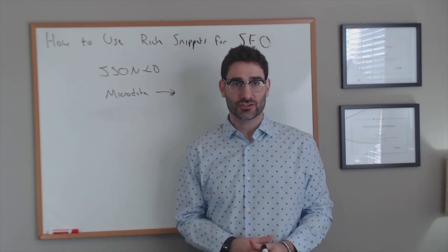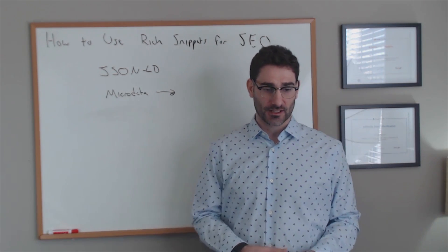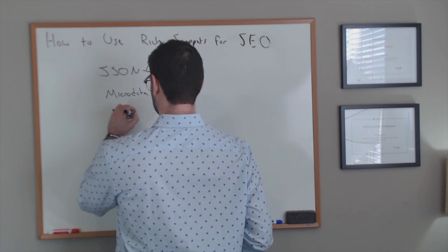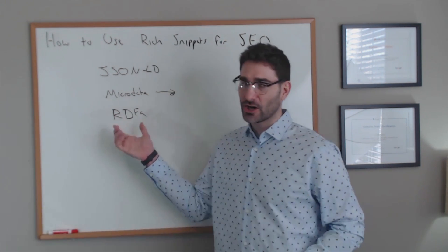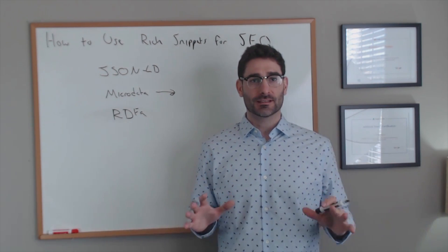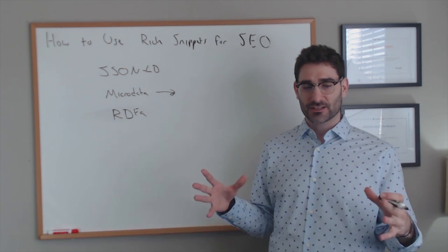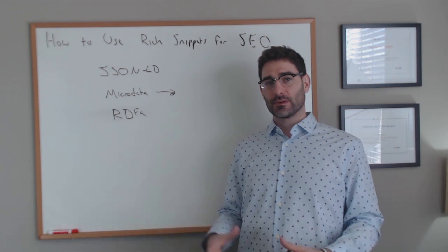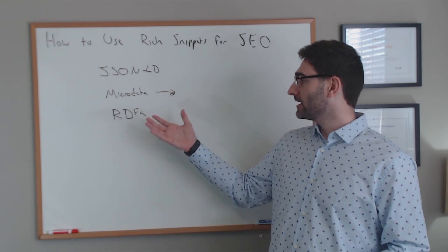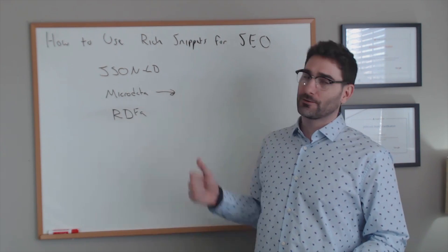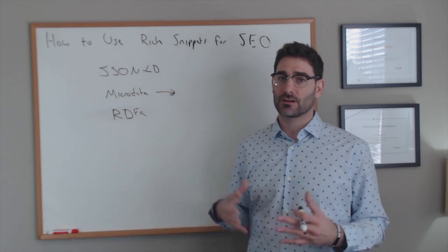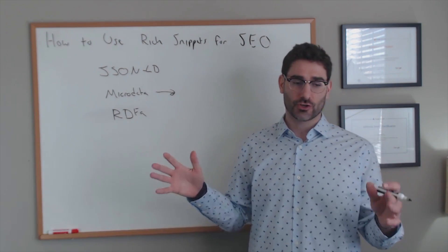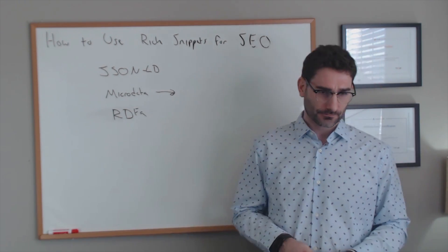Microdata is the easiest to generate and you can put it right inside your HTML code. The third type is RDFa, which is based on HTML5 — it's an extension that allows you to more easily add rich snippets to your website. In this video, and in general, we try to stick with microdata and be consistent across our whole website. It's the easiest to generate and I will show you why.